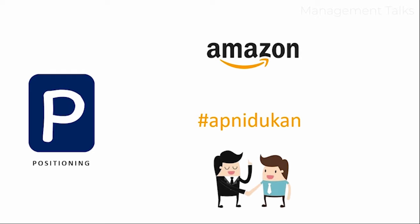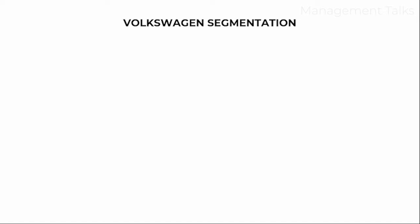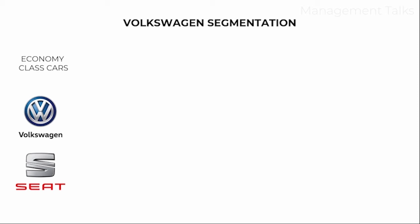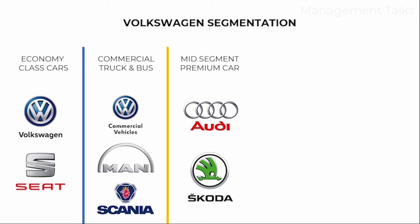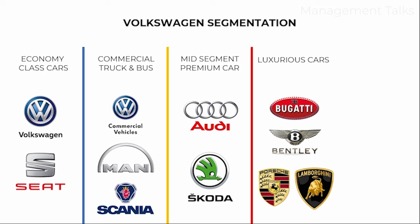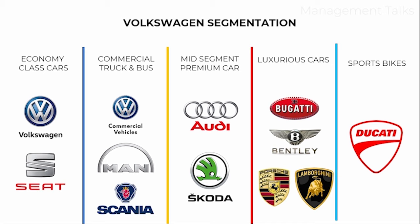Hope you all understand how important the STP model is in any business. Coming back to Volkswagen: Volkswagen has adopted a multi-segment targeting strategy, targeting the maximum number of segments. They have brands Volkswagen and Seat for the economic class cars. For commercial trucks and buses, they have Volkswagen Commercial Vehicles, MAN, and Scania. For mid-segment premium cars, they have Audi and Skoda. For luxury cars, they have Lamborghini, Bentley, Bugatti, and Porsche. And Ducati is targeting the sports bike segment. This is how Volkswagen became successful and is ranked 2nd in terms of sales worldwide.